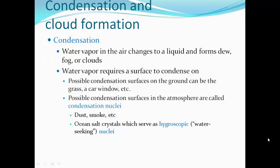Condensation: water vapor in the air changes to a liquid and forms dew, fog, or clouds. Water vapor requires a surface to condense on. Possible condensation surfaces on the ground include grass, a car window, etc. In the atmosphere, these are called condensation nuclei — particles of dust or smoke. Ocean salt crystals serve as hygroscopic nuclei — they are water-seeking and actually cause much larger raindrops than you get elsewhere.